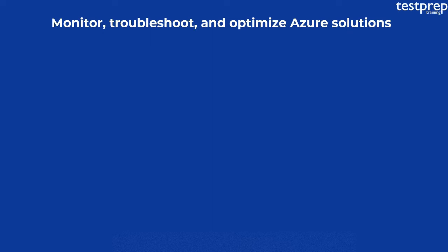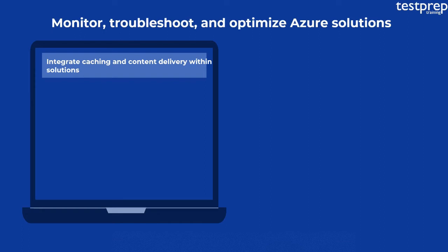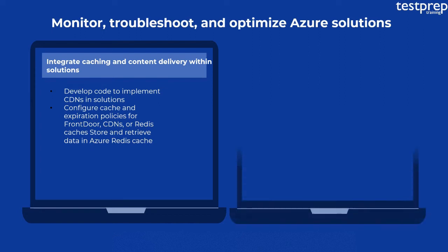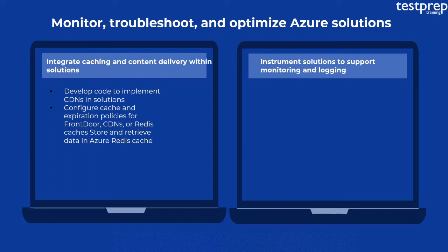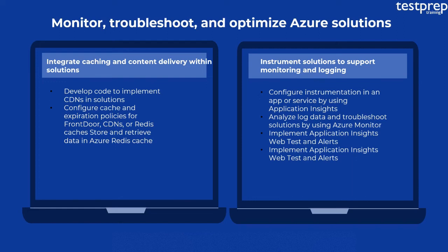Fourth, Monitor, Troubleshoot, and Optimize Azure Solutions. Number one: Integrate caching and content delivery within solutions. It contains two subtopics: First, develop code to implement CDNs in solutions. Second, configure cache and expiration policies for Front Door, CDNs, or Redis Caches, and store and retrieve data in Azure Redis Cache. Number two: Instrument solutions to support monitoring and logging. It contains four subtopics: First, configure instrumentation in an app or service by using Application Insights. Second, analyze log data and troubleshoot solutions by using Azure Monitor. Third, implement Application Insights web tests and alerts. Fourth, implement code that handles transient faults.